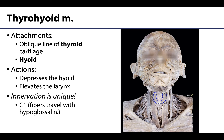Moving on to the last and also the smallest infrahyoid muscle, the thyrohyoid extends inferiorly from the oblique line of the thyroid cartilage up to the hyoid bone. When it concentrically contracts, it can depress the hyoid bone, but based on its attachment to the thyroid cartilage, it can also elevate or bring up the larynx — kind of the opposite of what we had with the sternothyroid. The thyrohyoid is also the oddball in terms of innervation, and anatomists love a unique innervation.